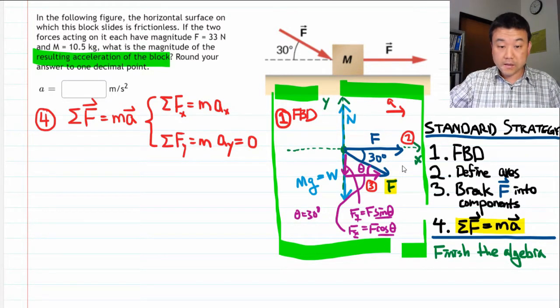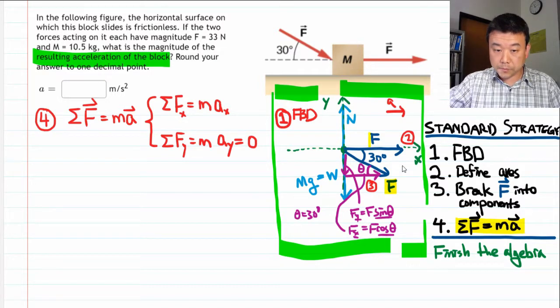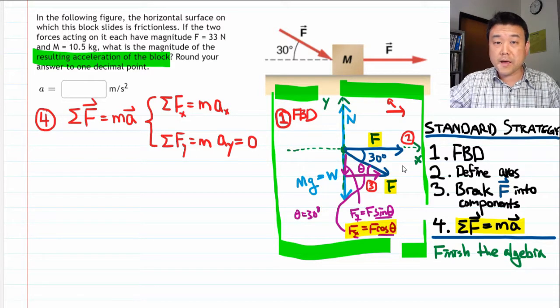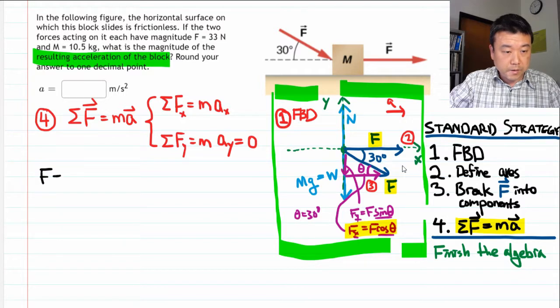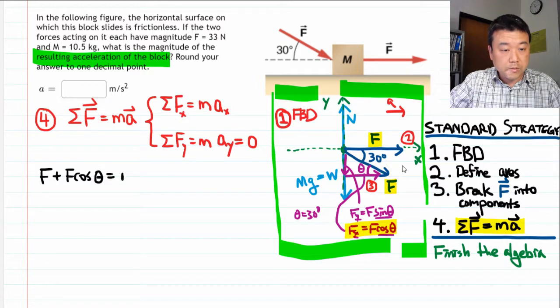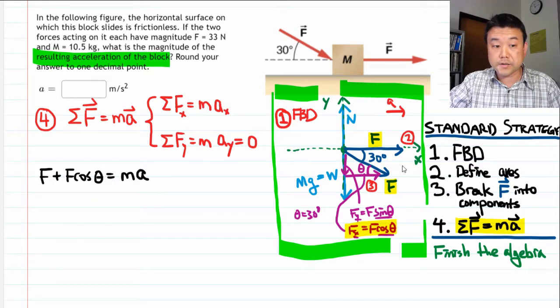So the net force in the x-direction, that would be one of the applied forces, the whole thing, and the x-component of the second applied force. And I guess that's it. Both the normal force and gravity are not along the x-direction at all. So f plus f cosine theta is equal to mass times, and here it is the whole acceleration, because the whole acceleration is along the x-direction. So that's our first equation.